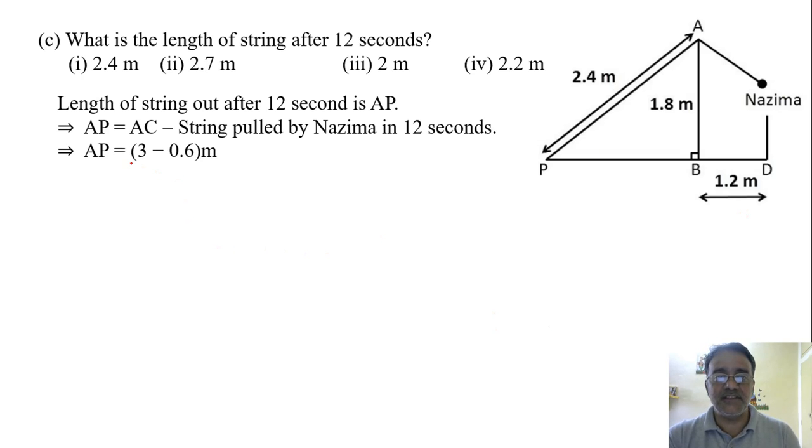So AP equals AC minus string pulled by Nazima in 12 seconds, that is 0.6. If you subtract 0.6 from 3, we'll get 2.4 meter. So the correct option is 2.4 meter. Now we'll see the next question.